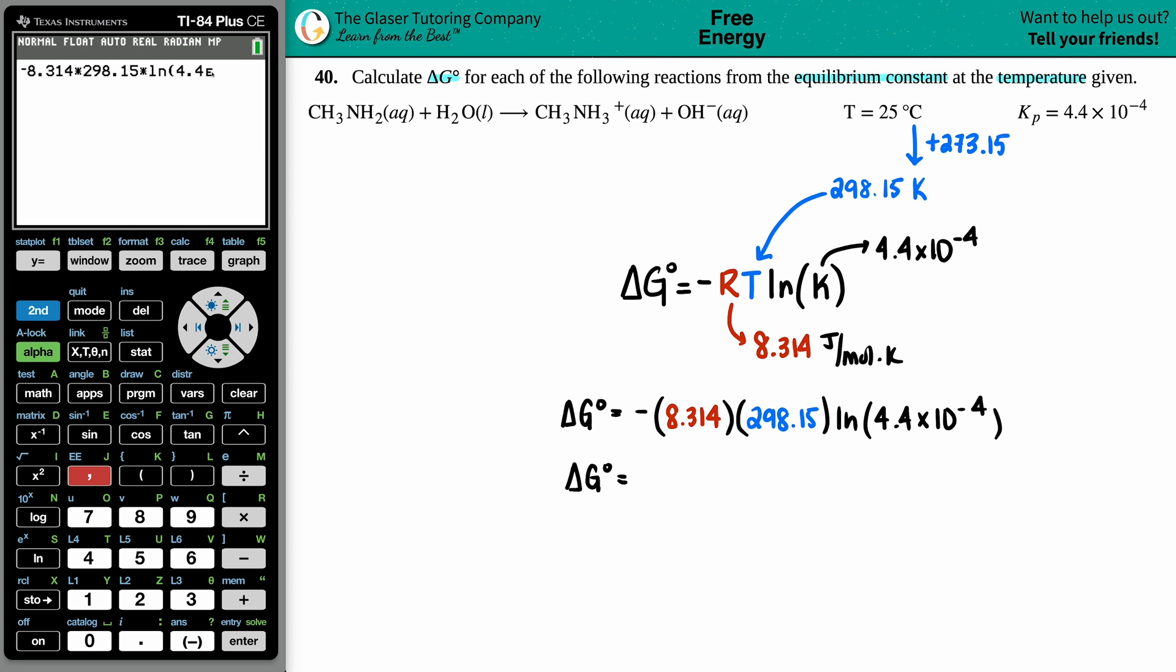This means times 10 to the. So, it's 4.4 times 10 to the. Now, all I have to do is just add that exponent, negative 4, close the parentheses, and press enter. There you go.